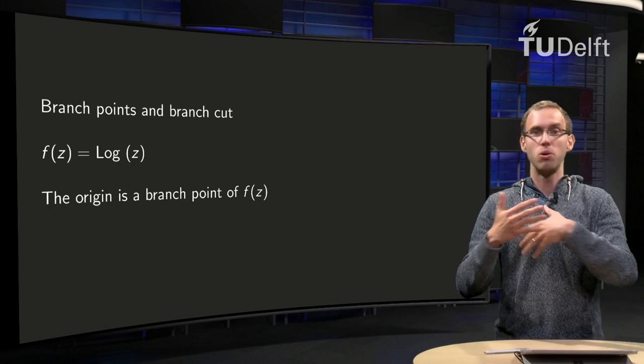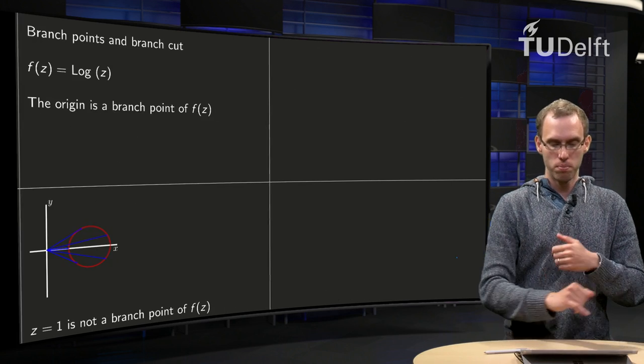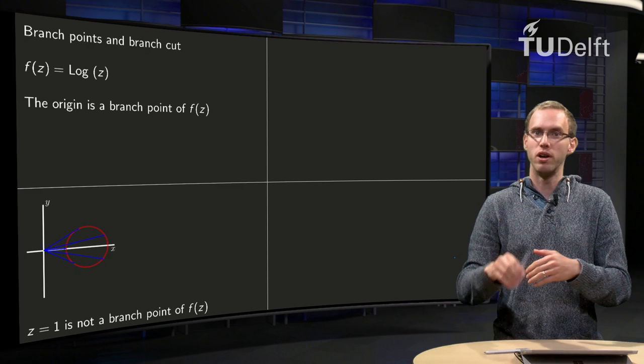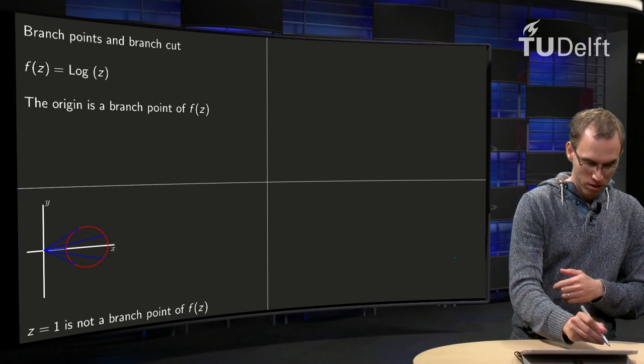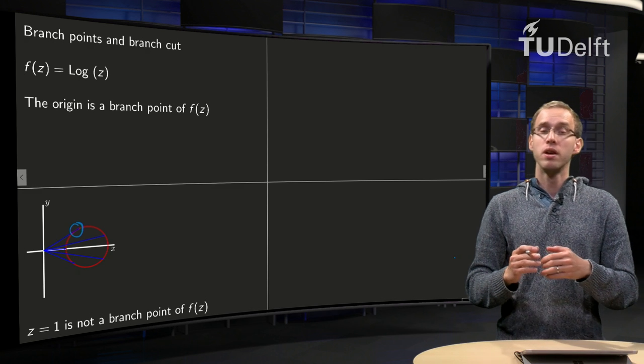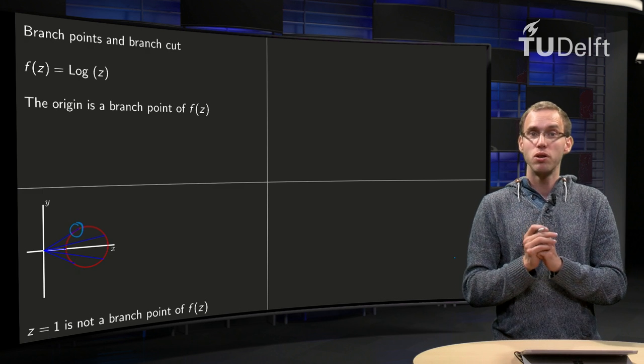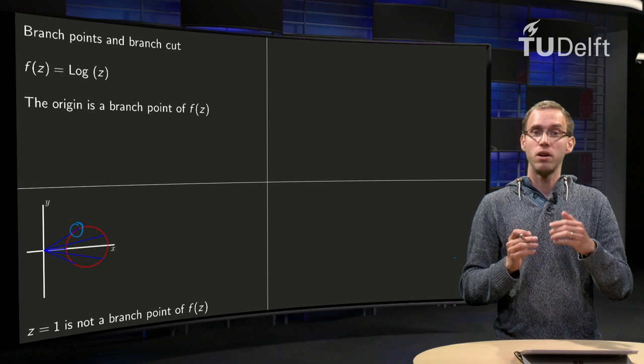So let's look at any other point in the complex plane. So for example point 1, what happens if we circle around the point 1? We start, for example, approximately over here. What do we see? The log of z is the ln of the modulus of z plus i times the capital arg argument of z.